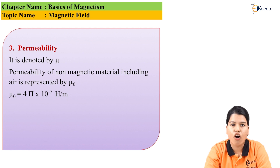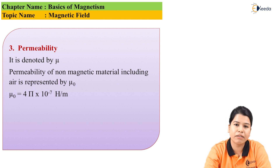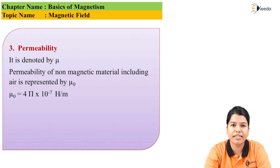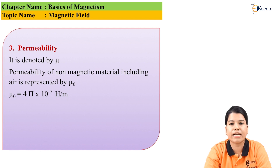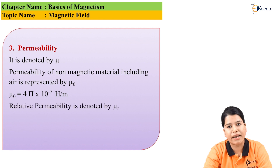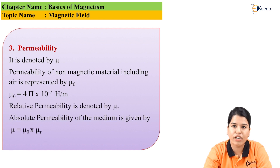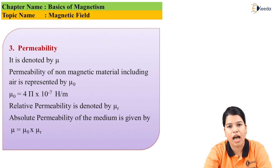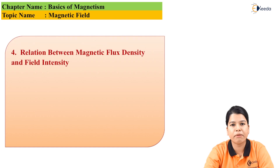The permeability of non-magnetic material is μ₀, but the permeability of a magnetic material is called relative permeability, represented by mu r (μr). The total absolute permeability of a magnetic material is the product of the permeability of air and the relative permeability of the magnetic material. The formula for absolute permeability is: μ = μ₀ × μr.